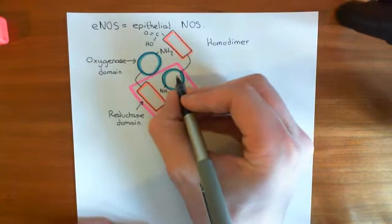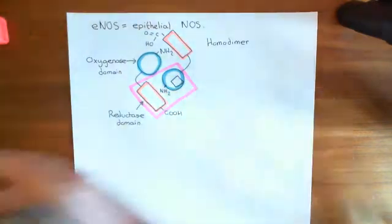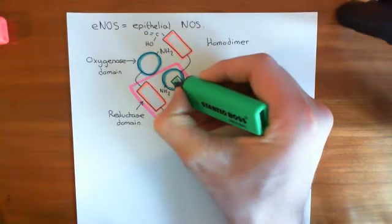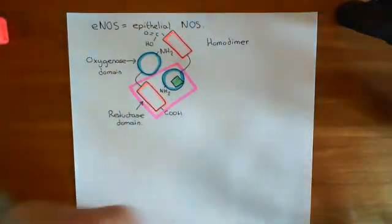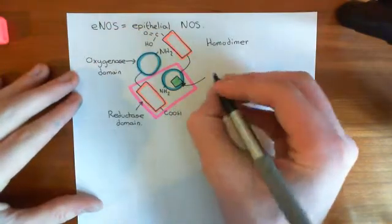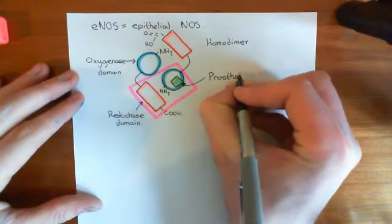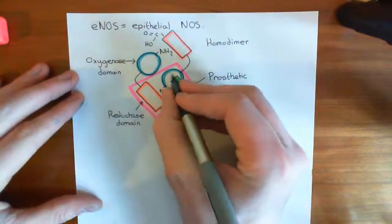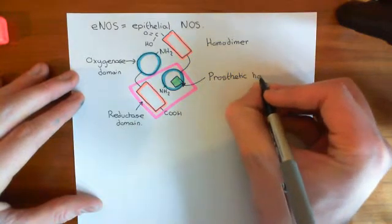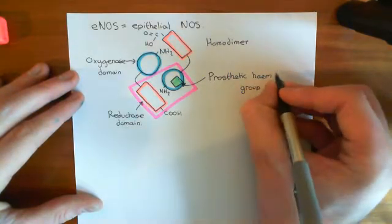The oxygenase domain has some very important binding domains. There is a prosthetic heme group attached to the side of the oxygenase domain — this is a prosthetic heme group, important in the reaction that will be catalyzed. This is the British English spelling; the American English spelling is H-E-M-E.